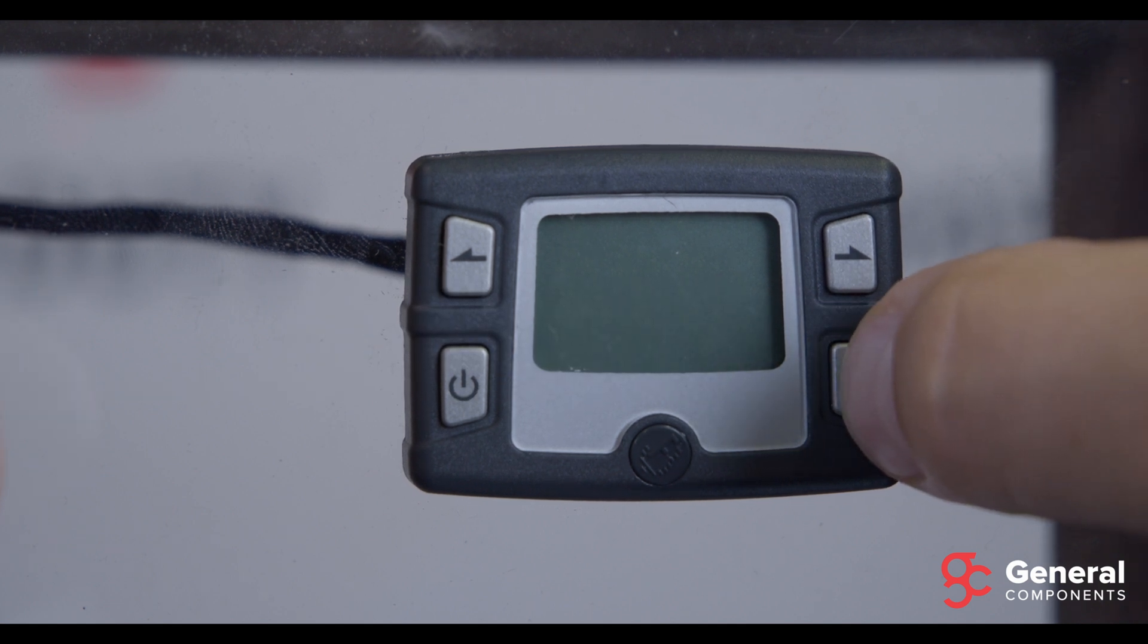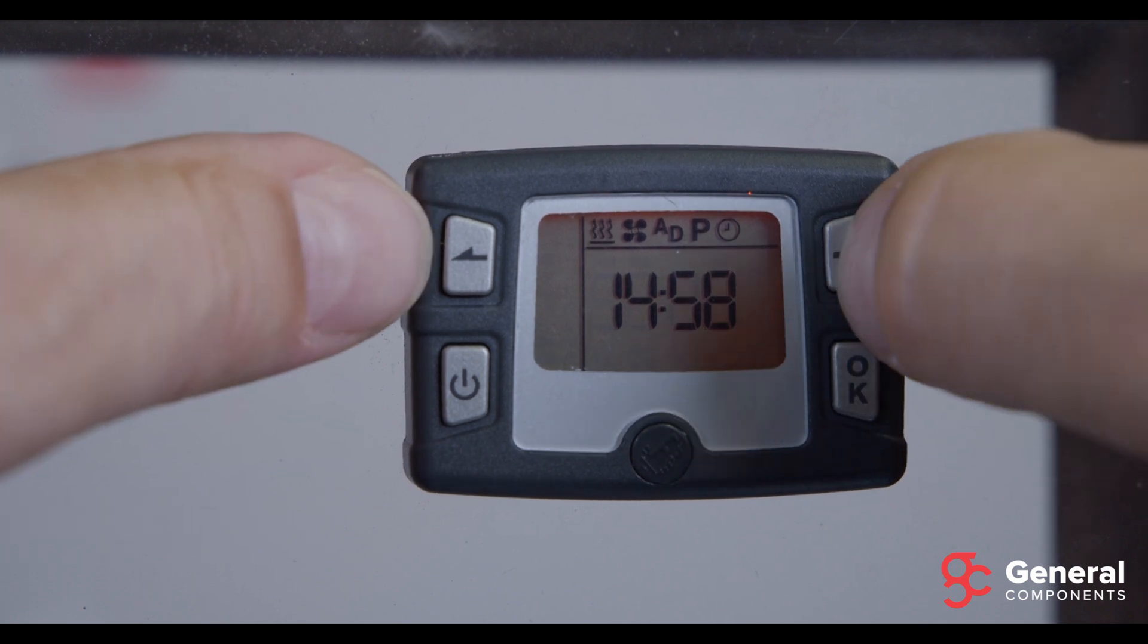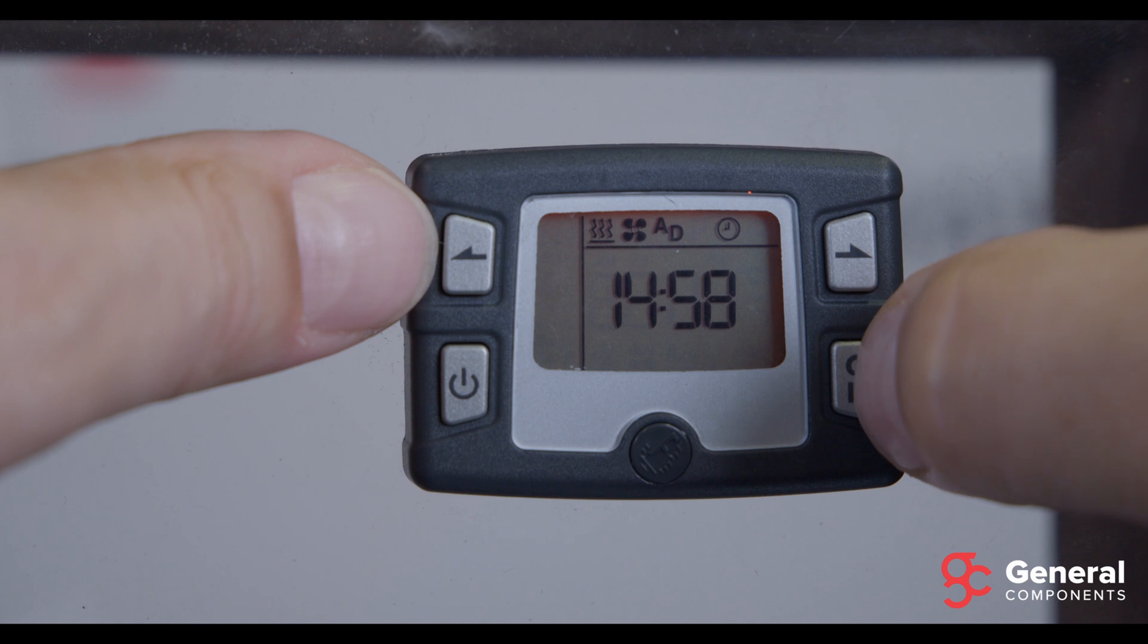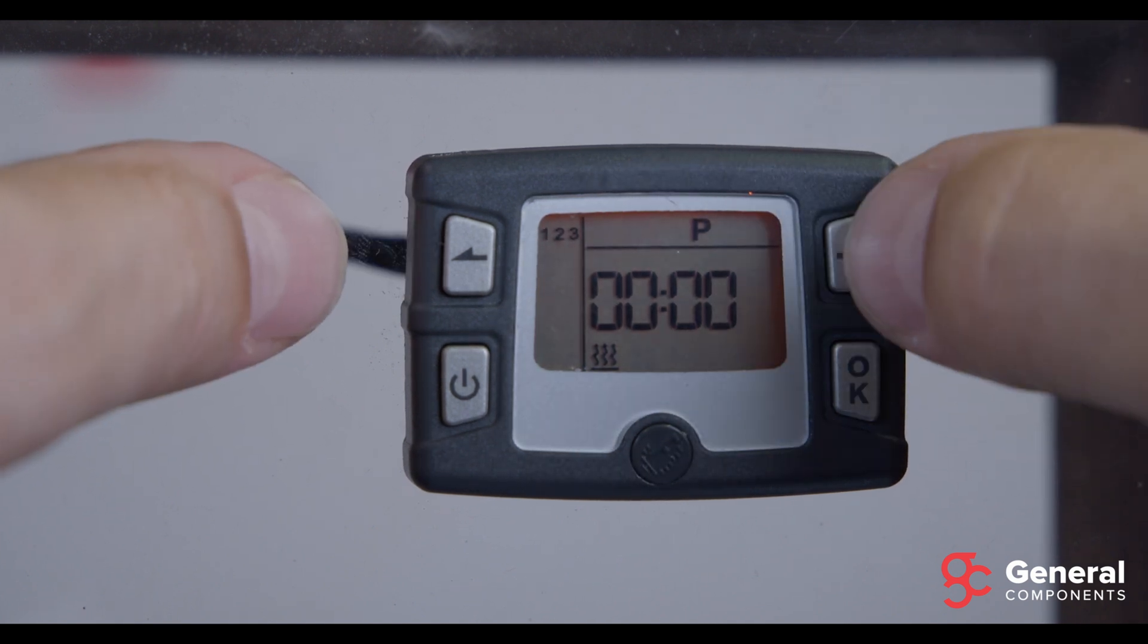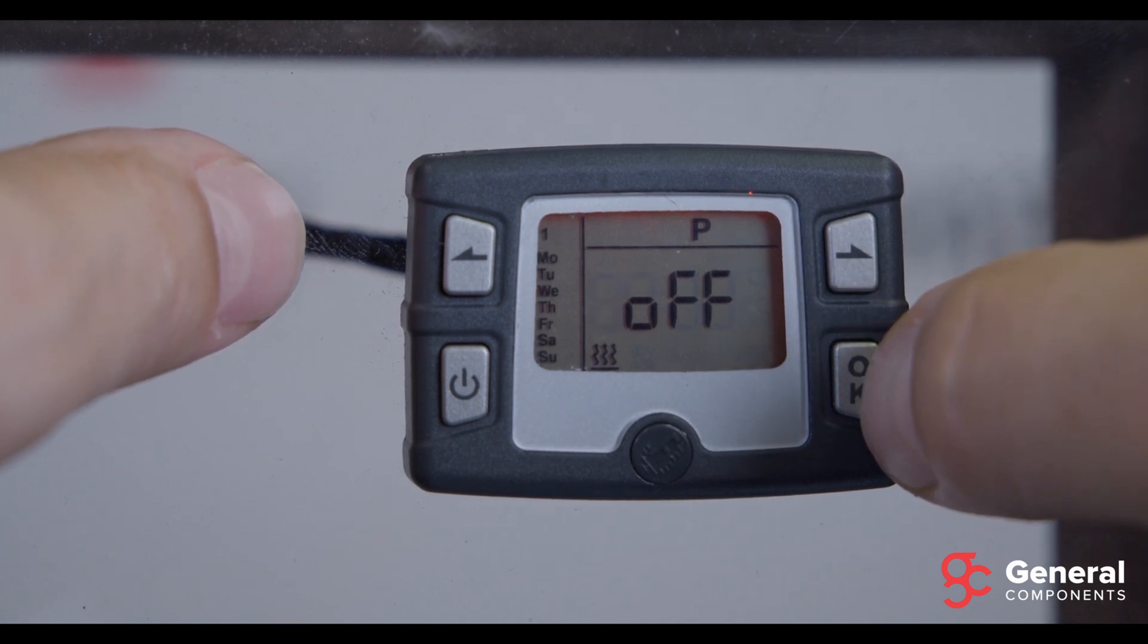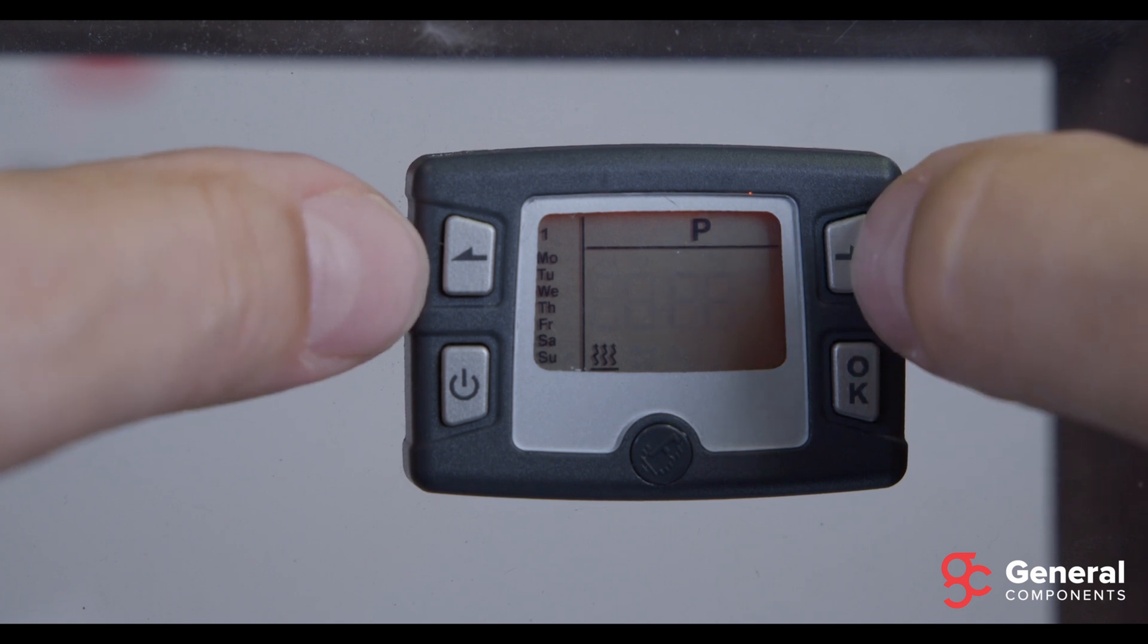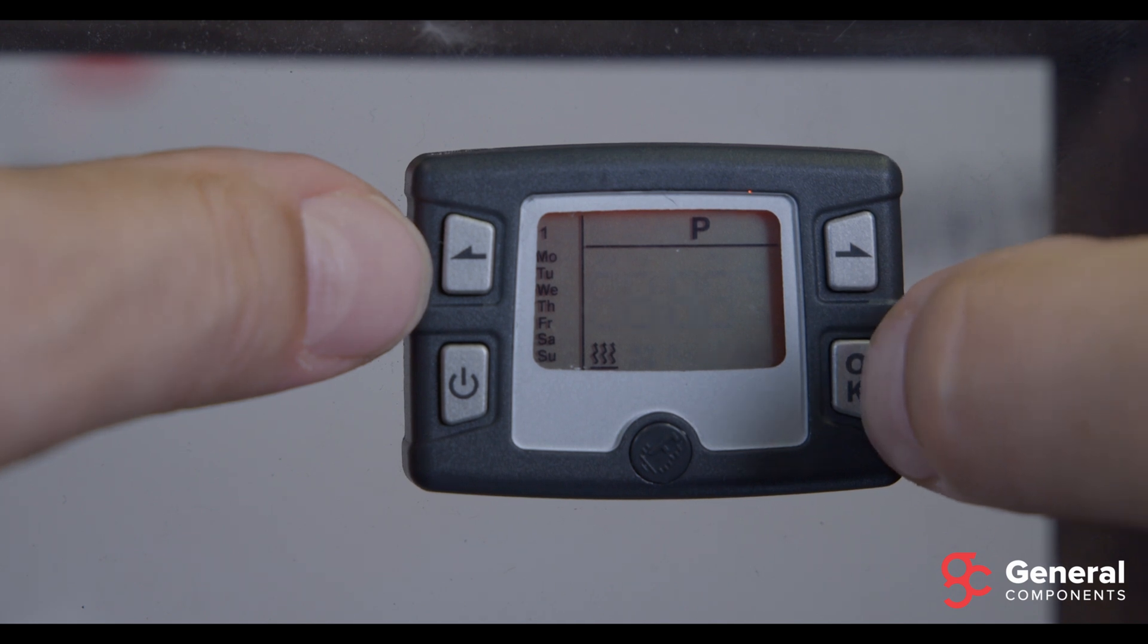The next feature we want to discuss is the programming feature, and you can have up to 3 start times per day in any combination of the 7 days in a week. So to do that, navigate to the P icon and hit OK. And then you will see the 3 programs displayed on the upper left corner. Let's go into program number 1 by pressing OK, and set program number 1 to ON by using the left and right arrow keys, and hit OK.